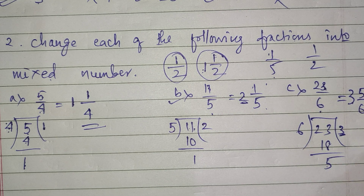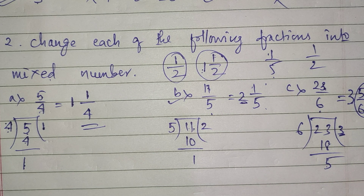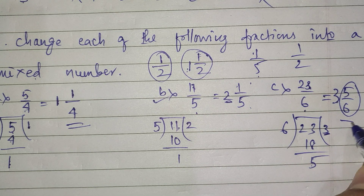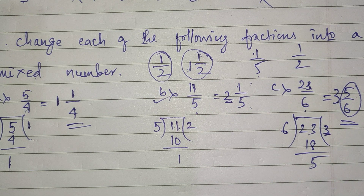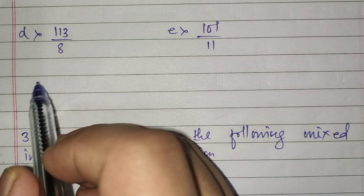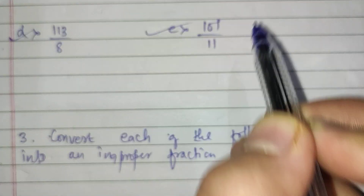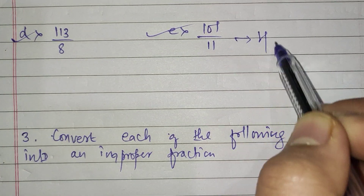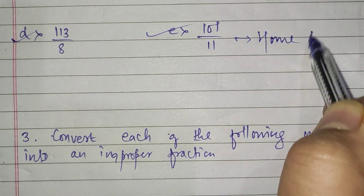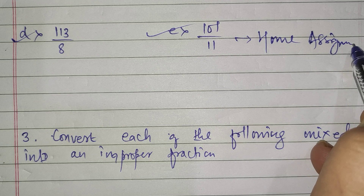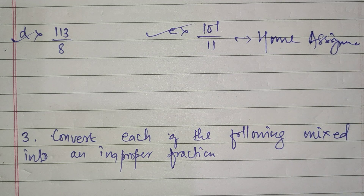So the quotient 3 is written as the whole number, giving us 3 whole 5 by 6. This is your mixed number. Parts D and E are left as a home assignment. This is very important from your exam point of view.